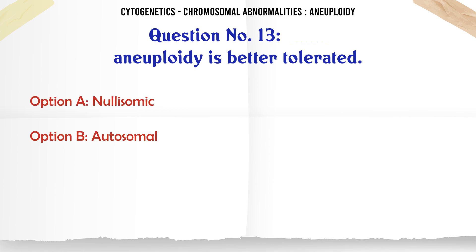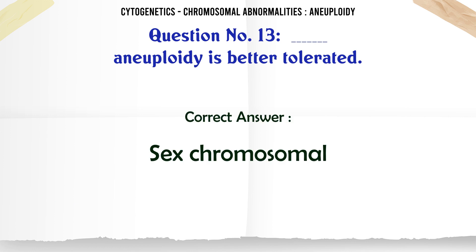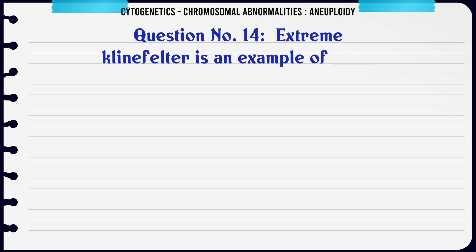Aneuploidy is better tolerated in: a. Nullisomy, b. Autosomal, c. Sex chromosomal, d. Chromosome 13. The correct answer is sex chromosomal.